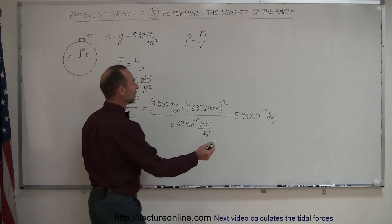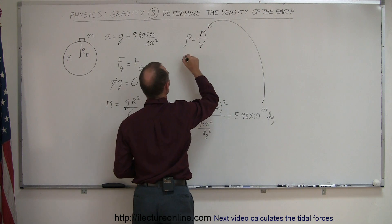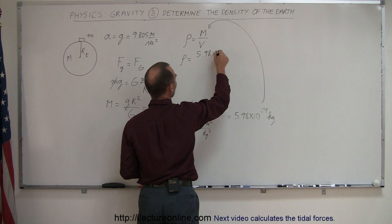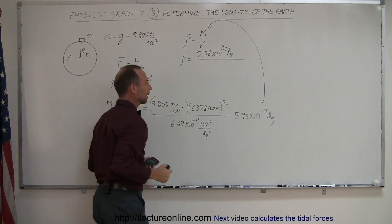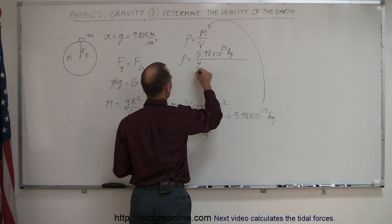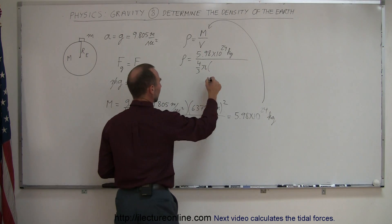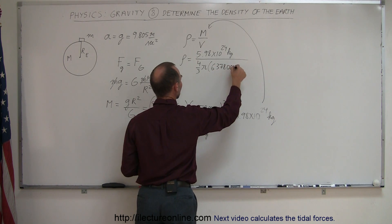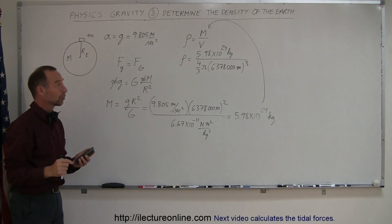Now we plug that in. The density is equal to 5.98 times 10 to the 24th kilograms, divided by the volume. The volume of a sphere — in our case an approximate sphere — would be 4/3 pi times the radius cubed. The radius is 6,378,000 meters, quantity cubed, and that will give us kilograms per cubic meter.